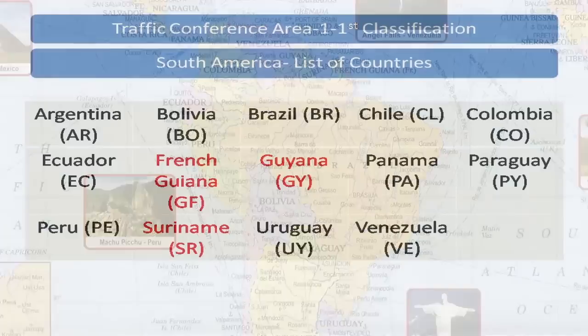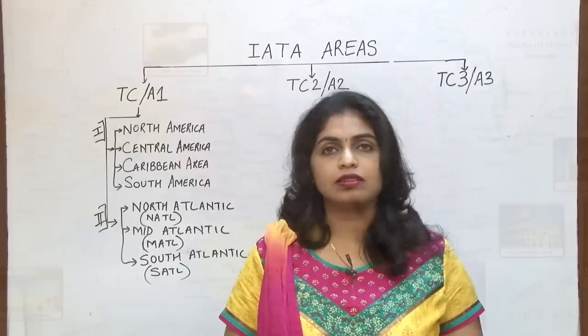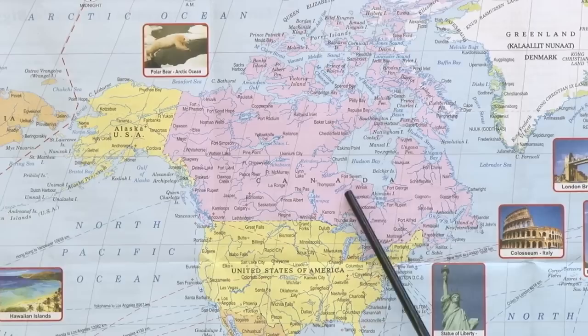Now let us move to the second classification group. First we will check what countries are included in North Atlantic (NATL). This is the zone included under NATL. We have approximately similar countries here as in the first classification.